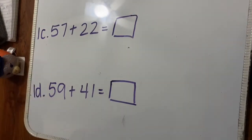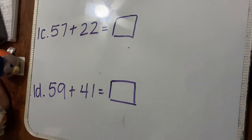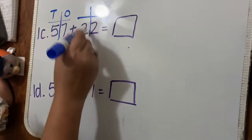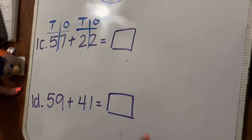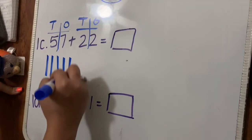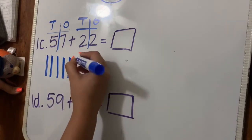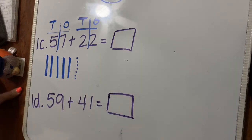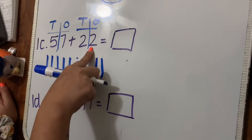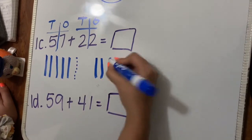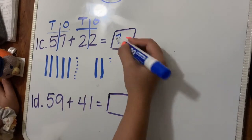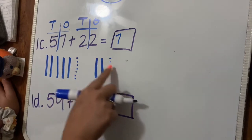For the last two questions on the front I'm going to show you the quick tens method — drawing your quick tens and your ones. Starting with 57: split into tens and ones. I draw five quick tens — one, two, three, four, five — and then seven ones — one through seven. Then for 22: I draw two quick tens and two ones. Now I add them all up: seven tens and nine ones.